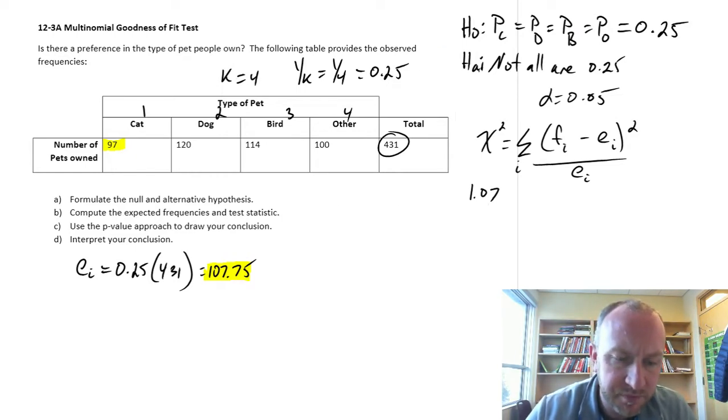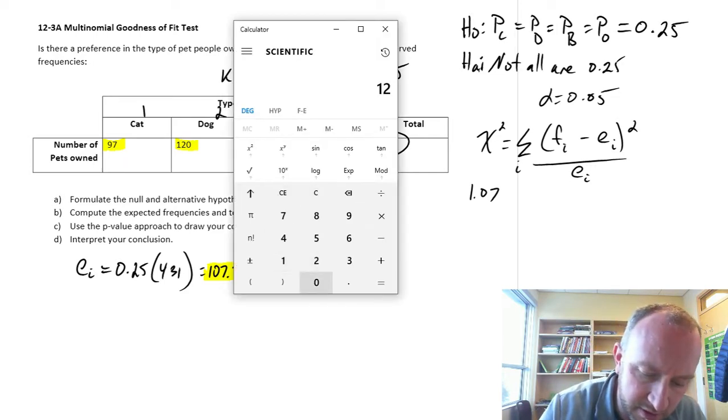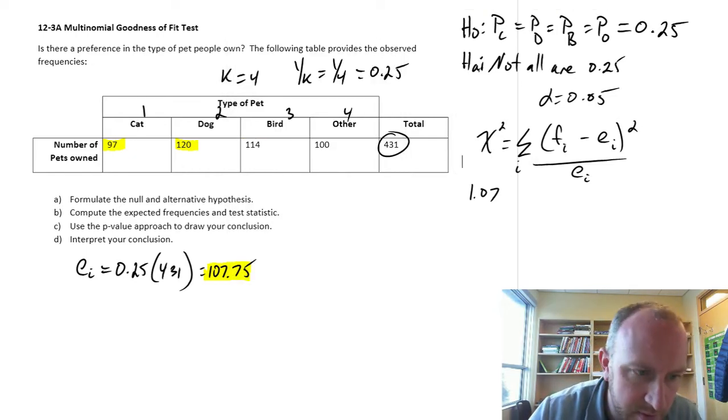Now the next one, we use our observed number of dog owners. This is 120 minus 107.75 squared divided by 107.75, and I have 1.4.